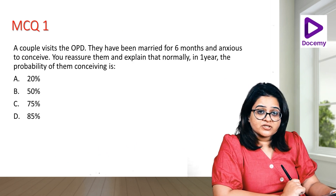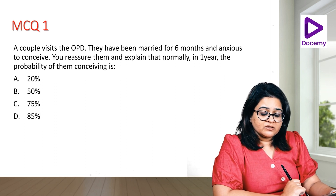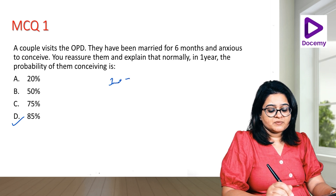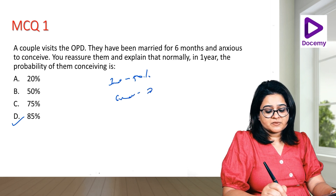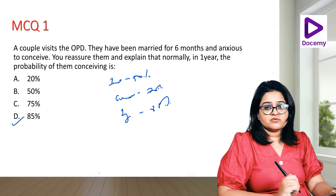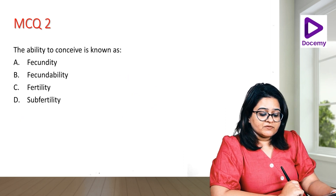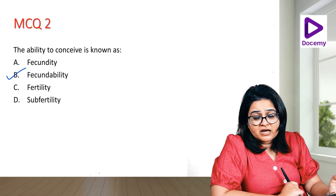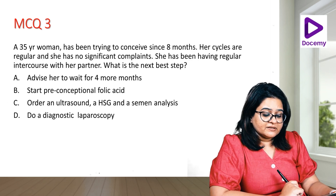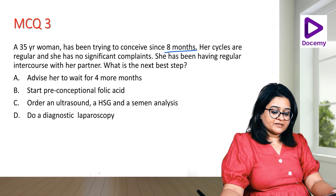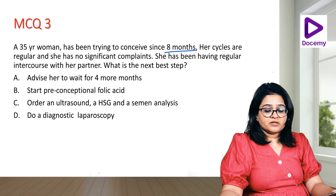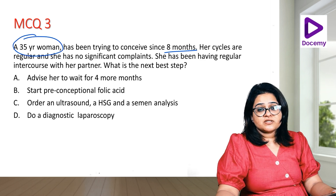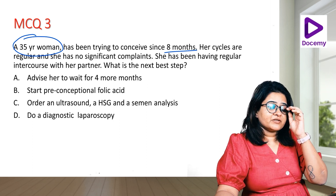MCQ: A couple visits the OPD, married for six months and anxious to conceive. You reassure them that normally in one year the probability of conceiving is 85 percent — in three months 50 percent, by six months around 70 percent, and at the end of one year around 85 percent. The ability to conceive is known as fecundability. Fecundity is the ability to have a live pregnancy or live baby.